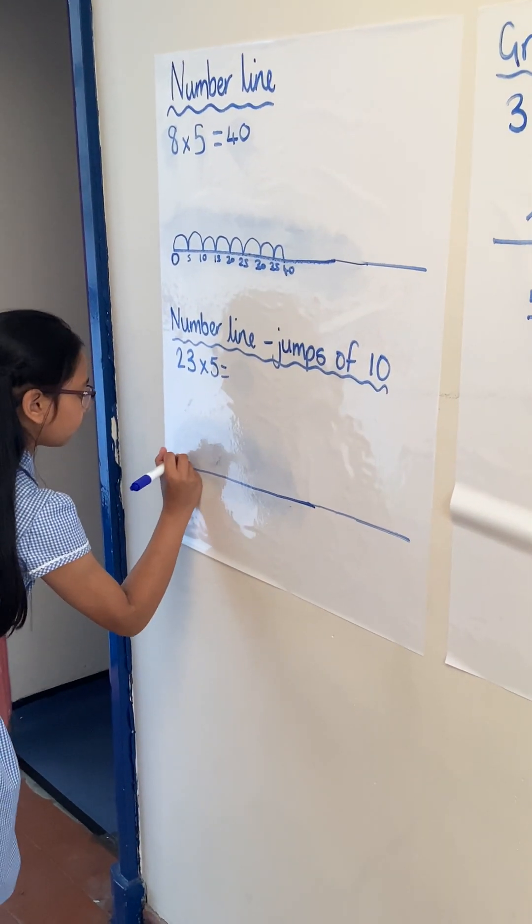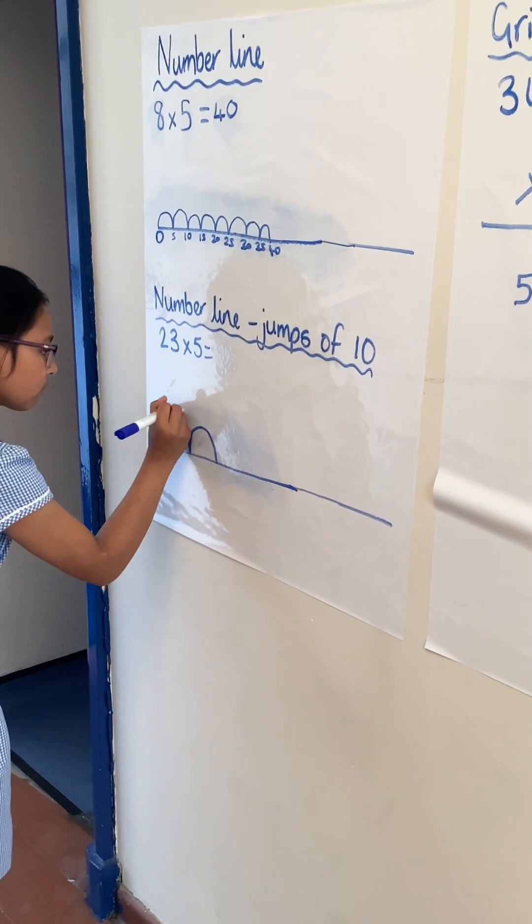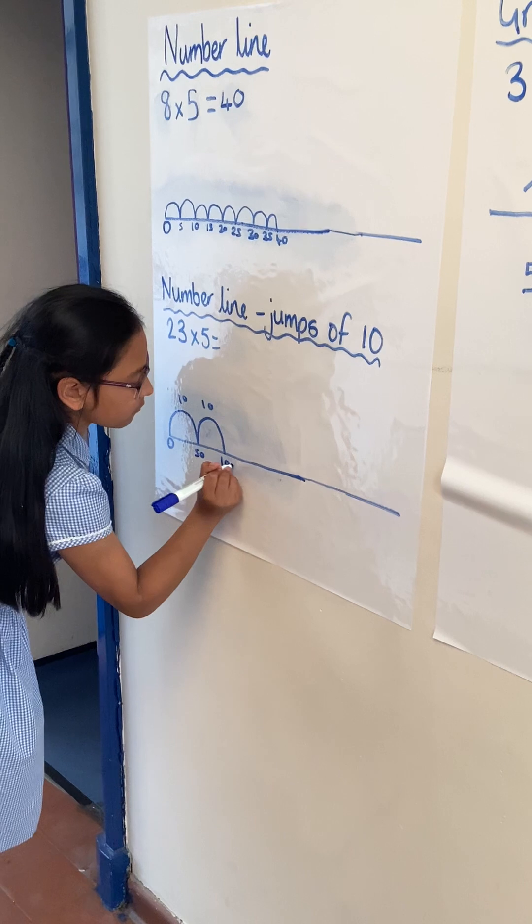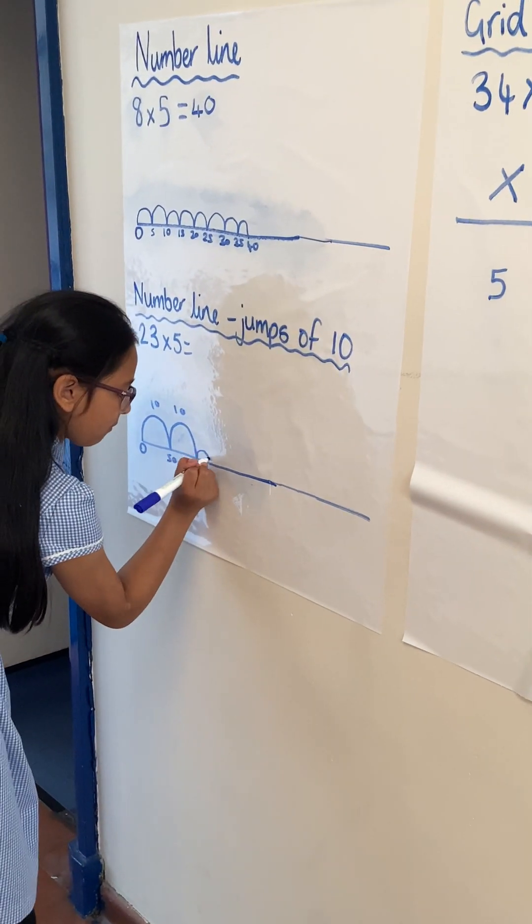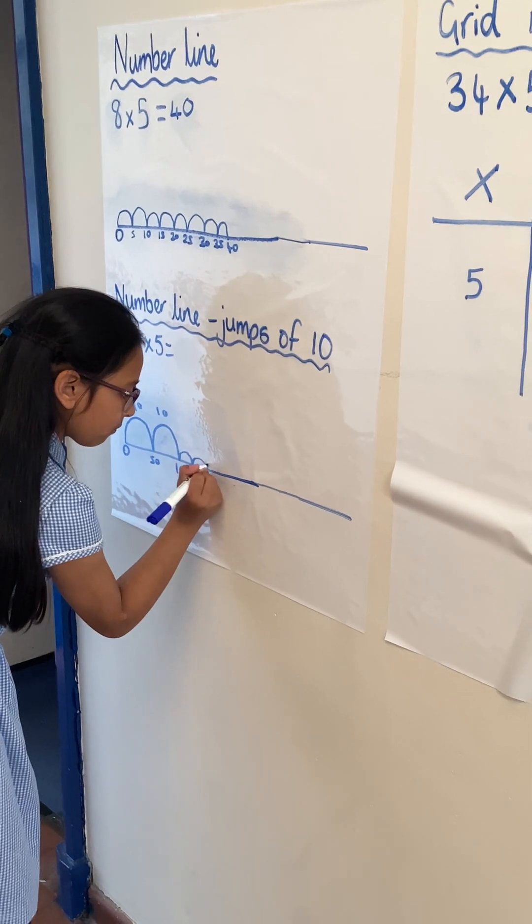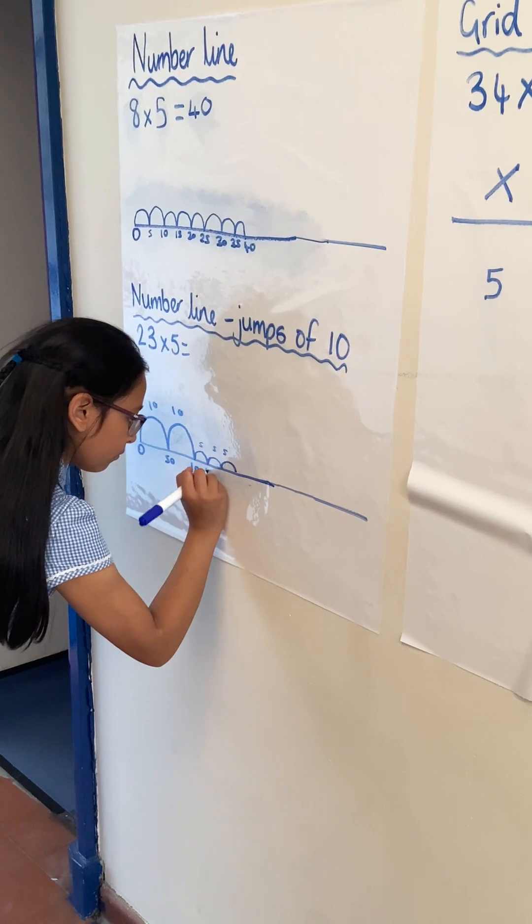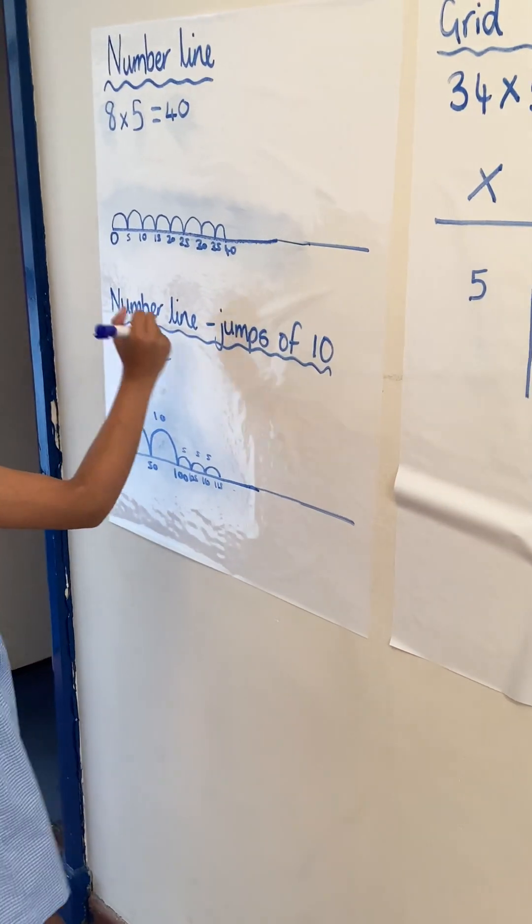We're going to partition our 23 into 2 lots of 10 and 3 ones. So, we do 10 times by 5, which is 50, and then another lot of 10, which is 100, and then we add 3 lots of 5. 23 times 5 is 115.